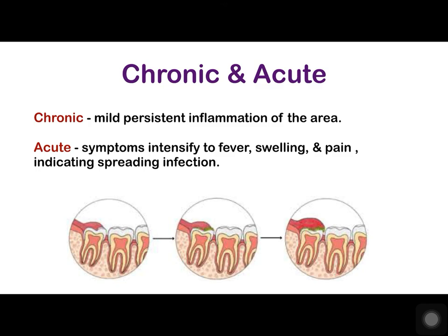We have acute and chronic pericoronitis. Chronic pericoronitis is a mild persistent inflammation of the area. In the acute form, symptoms intensify to fever, swelling and pain, indicating a spreading infection of coronitis.